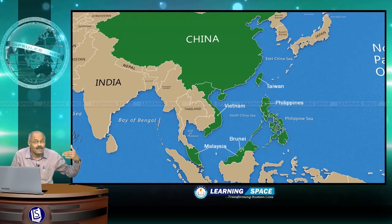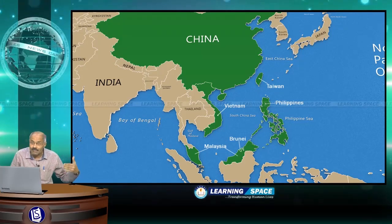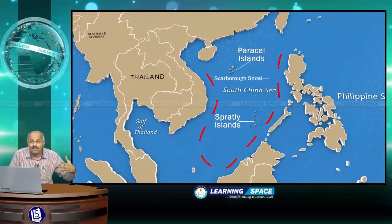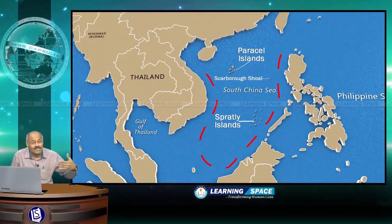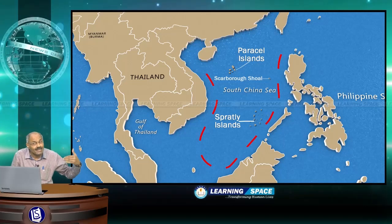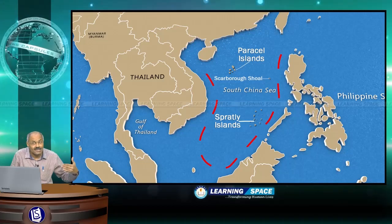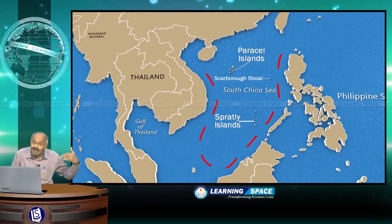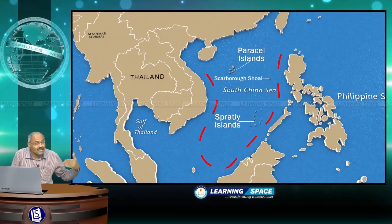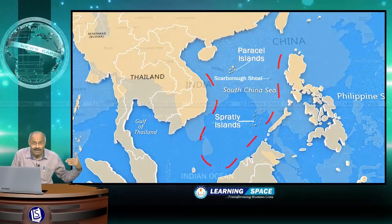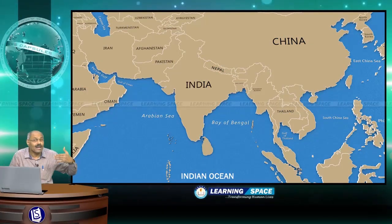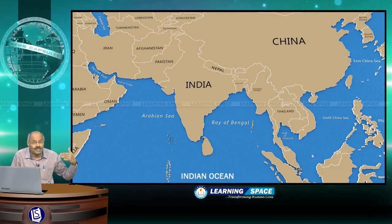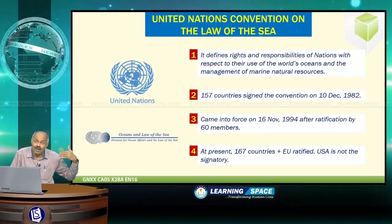The five nations are Philippines, Taiwan, Brunei, Malaysia, and Vietnam. China is arbitrarily claiming rights up to the nine-dash line. Important islands — the Paracel Islands, Spratly Islands, and Scarborough Shoal — are in the news recently because China is developing naval bases and airstrips there. On one side we have the Bay of Bengal, Indian Ocean, and Arabian Sea. We will now deliberate on the rights of any coastal country under UNCLOS.